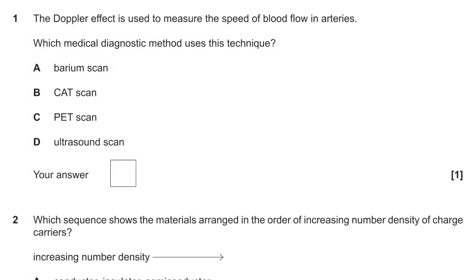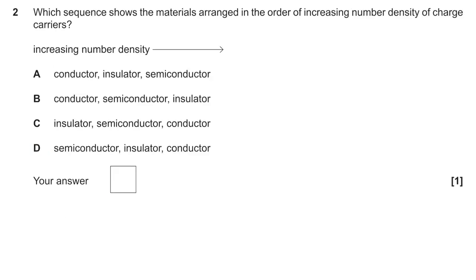Question one: the Doppler effect is used to measure the speed of blood flow in arteries. Which medical diagnostic method uses this technique? It's an ultrasound scan, because it fires ultrasound at your blood and then it comes back.